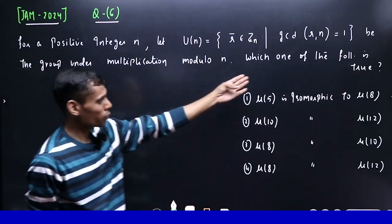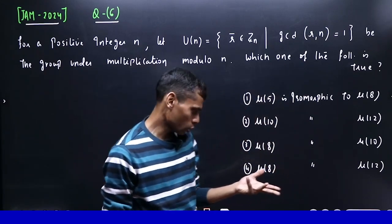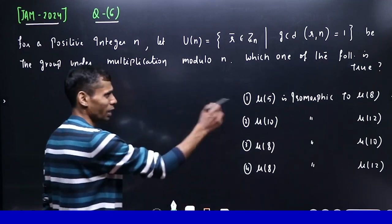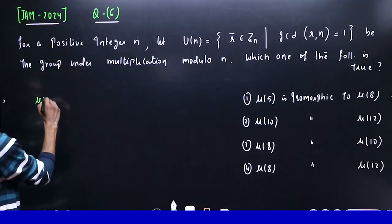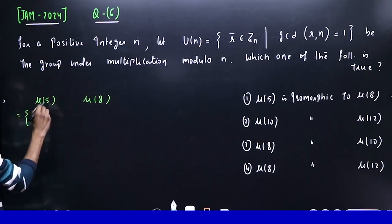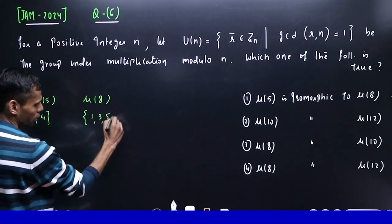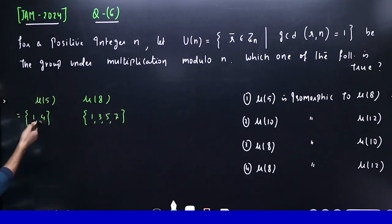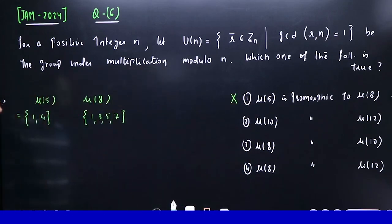These four options can be confusing if you've studied group theory superficially, but with clarity it will work out. Let's start: What is μ(5) and μ(8)? μ(5) contains natural numbers under 5 and coprime to 5, so it has only 1 and 4. μ(8) has 1, 3, 5, 7. For groups to be isomorphic, number of elements must at least be equal. Here we have two elements versus four elements, so they can't be isomorphic. This is incorrect.